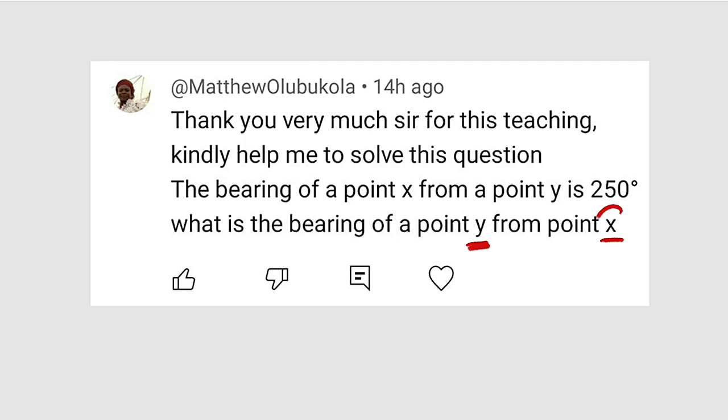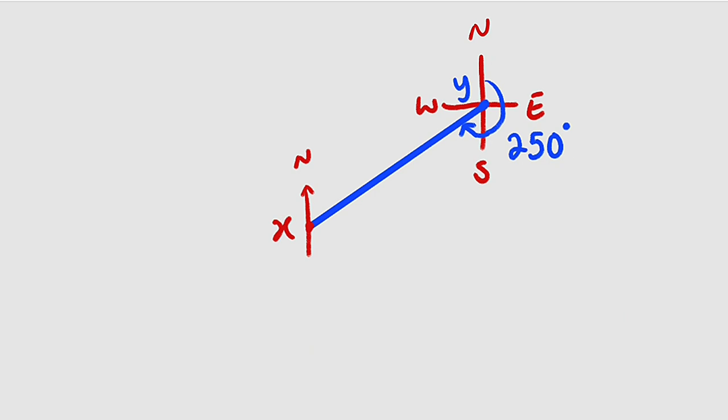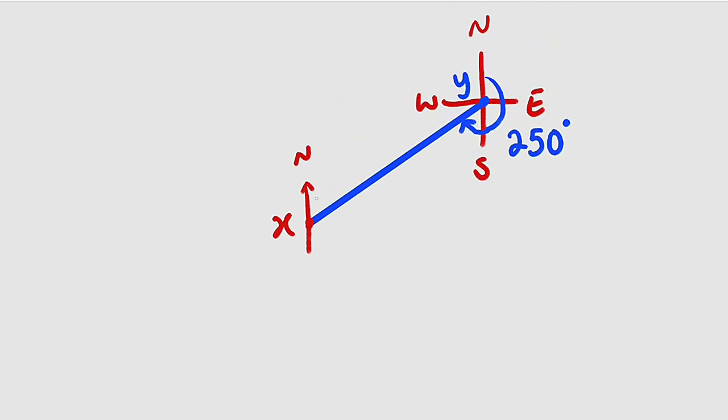So it means we should calculate the angle constructed from X down to Y. All right. So what do you expect from X? You want to construct or calculate the angle from the north down to this line heading to Y. So what will be this angle? Let me call it theta.